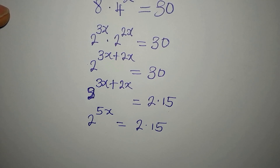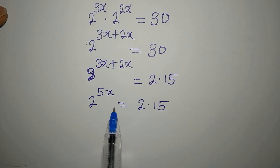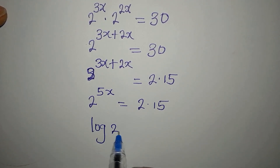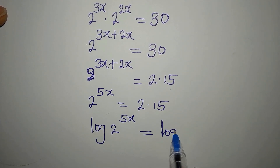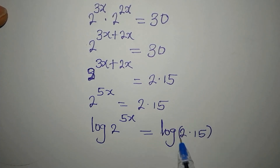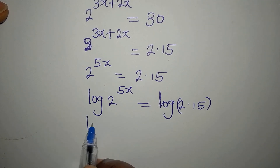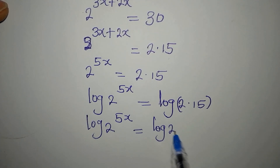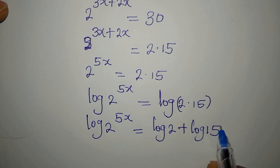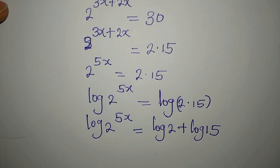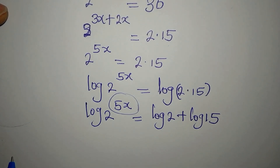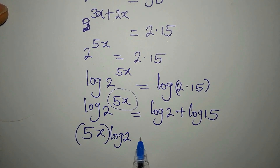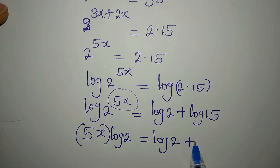The bases are not the same, so we take the log of both sides. We take log of 2 to the power of 5x equal to log of 2 multiplied by 15. Applying log laws, that becomes log of 2 to the power of 5x equals log 2 plus log 15, since this is multiplication. The power 5x comes down and multiplies log 2, giving us 5x times log 2 equals log 2 plus log 15.